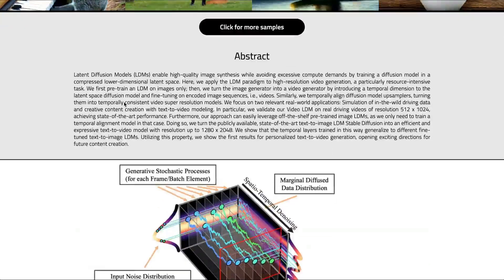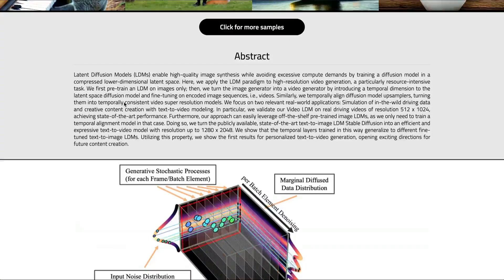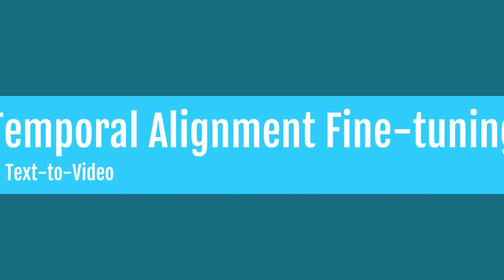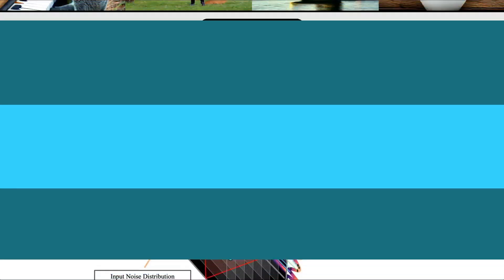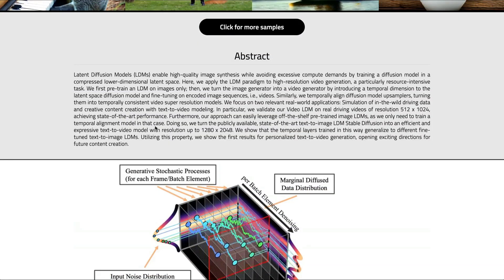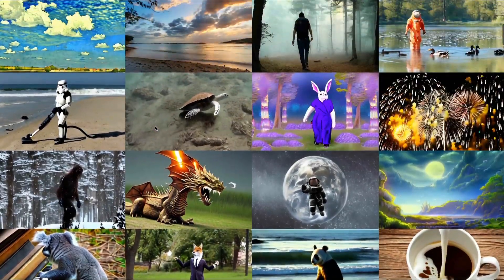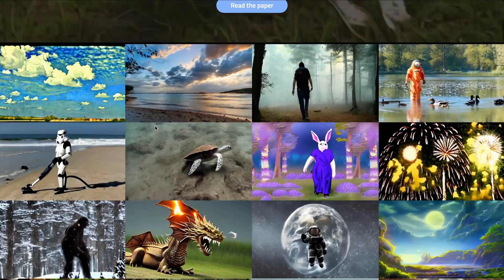The beauty of this paper is that you can take existing diffusion models like Stable Diffusion that are trained for images, and then do one change called temporal video fine-tuning. You can do temporal video fine-tuning and then make those models produce videos that are quite smooth and high resolution — and that is what this paper is about.